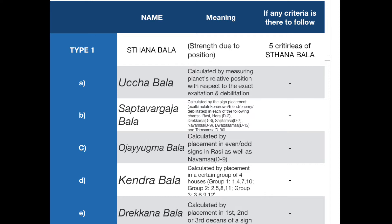The fourth criterion of Sthana Bala is Kendra Bala. Kendra means houses 1, 4, 7, and 10, and Bala means strength. It is calculated by placement in certain groups of four houses: Group 1 is houses 1, 4, 7, 10; Group 2 is houses 2, 5, 8, 11; Group 3 is houses 3, 6, 9, 12. The fifth criterion is Drachana Bala, calculated by placement in the first, second, or third decan of a sign.